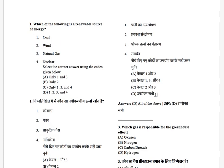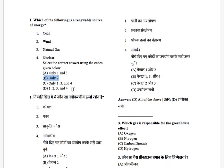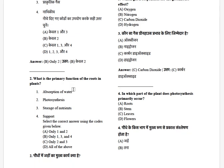First question: Which of the following is a renewable source of energy? The options are: coal, wind, natural gas, and nuclear. The answer is only option two — that is wind.